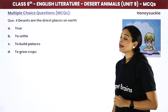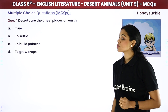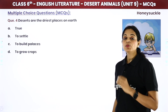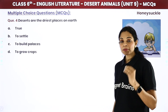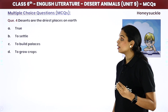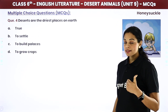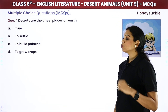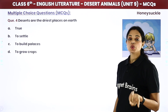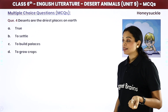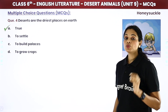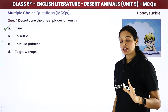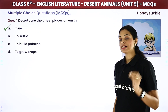Deserts are the driest places on earth — deserts जो हैं, वो पूरी earth में सबसे ज्यादा dry places होते हैं। The statement is true — yes, पूरी दुनिया में जो driest places होती हैं, वो होती हैं desert.